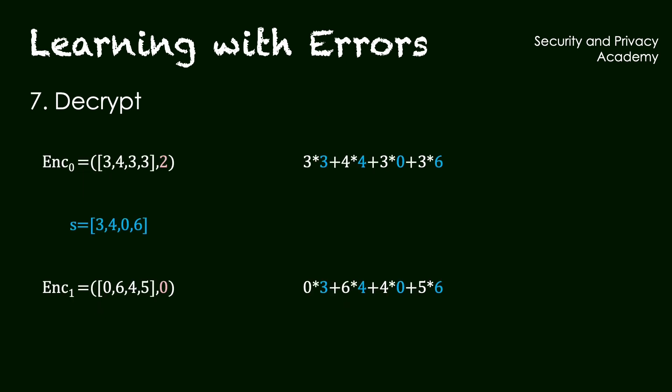To decrypt, we multiply the individual items of the ciphertext a and s, as we did as a preparation for the encryption, and take modulo 7 of the result. We subtract that result from the b values, 2 and 0, respectively. If we, as we do here, arrive at a negative value, we add the modulo to it to get a positive value.